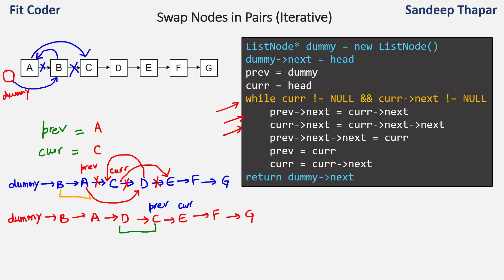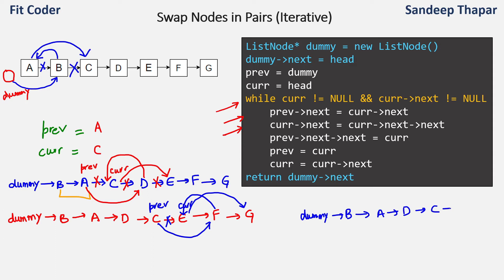In the next iteration we set next of previous to currentNext, creating the link from C to F. Then we create the link from E to G, and then the link from F to E. The linked list becomes: dummy, B, A, D, C, F, E, G. Then we move previous to E and current to G. In the next iteration we check the while condition — currentNext is null because G is the last node, so the while loop terminates. We return dummy next, which points to B. Our linked list is B, A, D, C, F, E, G — nodes have been swapped in pairs using the iterative method.